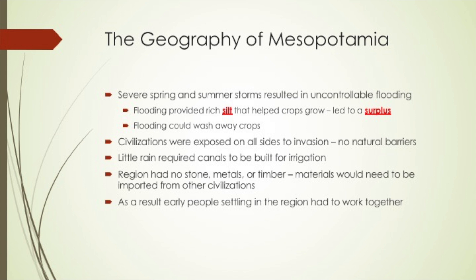Geography played a very important role in Mesopotamian civilizations. While the area between the two rivers provided plenty of irrigation, severe spring and summer storms often resulted in uncontrollable floods. The floods had benefits because flooding waters brought large deposits of silt, which made the soil very good for growing crops, leading to surpluses in food production. However, flooding could also wash away crops or villages. The other downside was that the civilizations were exposed on all sides to invasion, as there were no natural barriers such as mountains or large deserts to keep people away.